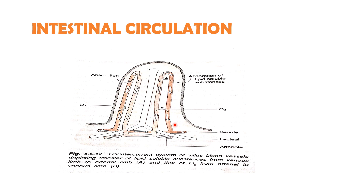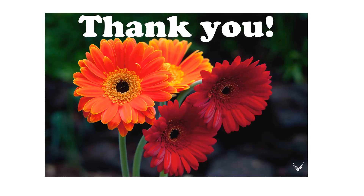Neural regulation of splanchnic vessels: the vessels are richly innervated by noradrenergic sympathetic nerve fibers which have mild tonic discharge, causing moderate vascular resistance in splanchnic vessels. The main role of neural regulation is during cardiovascular crisis such as hemorrhage or shock, when blood flow is diverted to vital organs. Autoregulation, which adjusts vascular resistance to maintain relatively constant blood flow over a wide range of arterial pressure, is also well developed in mesenteric vessels, like that of kidney, brain, heart and skeletal muscles, mainly through metabolic mechanisms.